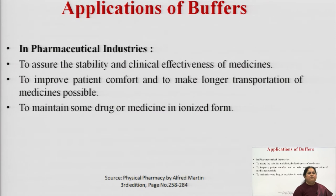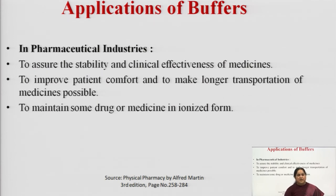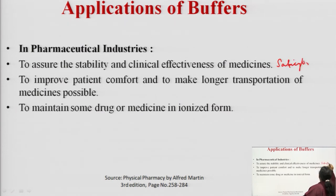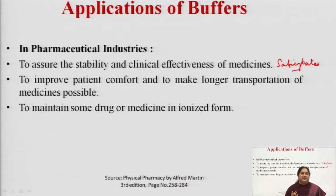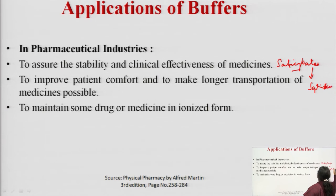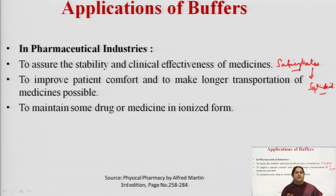Next are the applications of buffers, which are very important in pharmacy. In pharmaceutical industries, buffers are used to assure the stability and clinical effectiveness of medicines. For example, salicylates: if they are kept in a particular pH solution they will maintain their activity. If the pH of the solution is changed, the salicylates will precipitate out as salicylic acid and there will be a loss in the activity of the salicylates, changing the formulation and eliminating the expected pharmacological action.